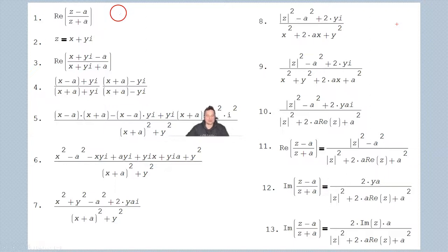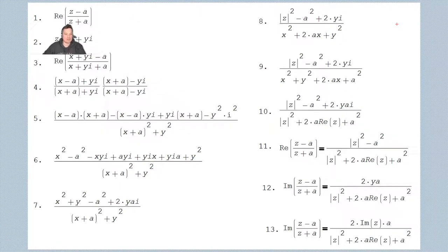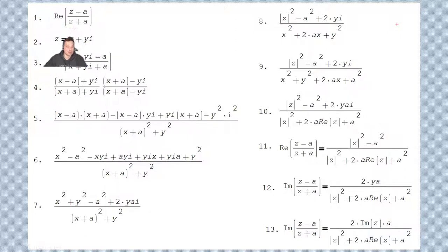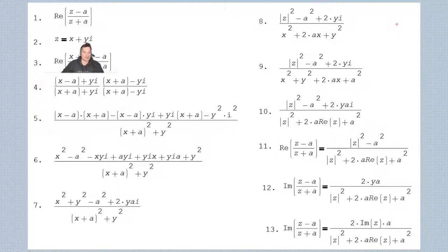Welcome. In this one I'm going to show you how to find the following. The objective is to find the real part of z minus a over z plus a. Keep that in mind. So remember that z is defined as x plus yi, where x is the real part, y the imaginary part, and i the imaginary unit. This is a complex number.